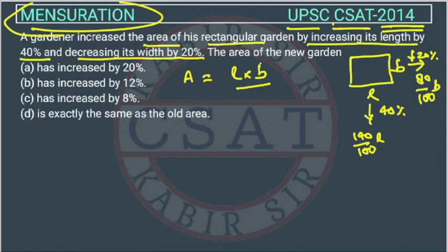So the new area is L into B - L is 140 over 100 into L, into B. B is 80 upon 100 into B. So this is the new area and this is the old area.